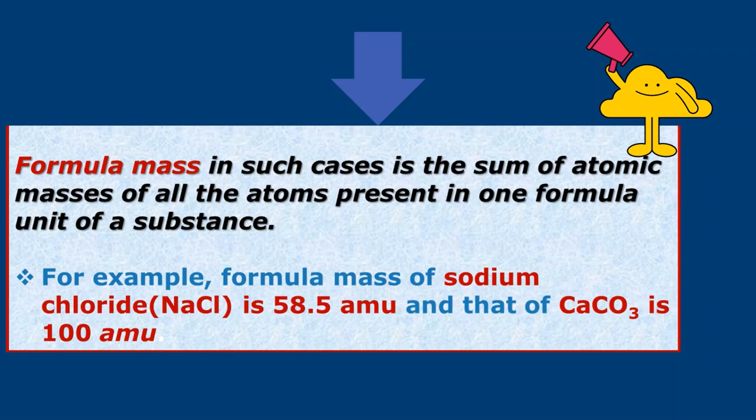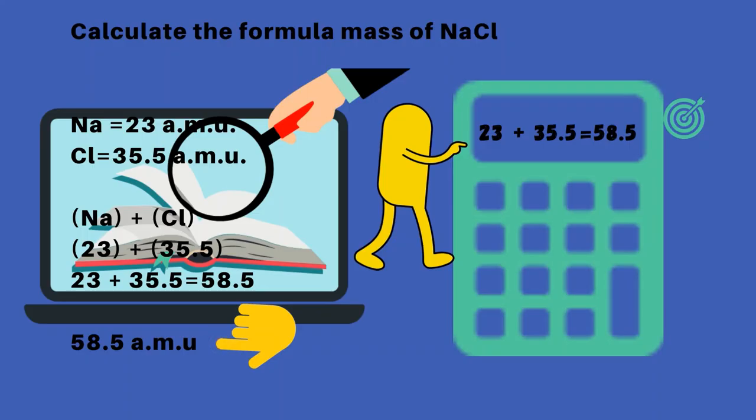Calculate the formula mass of NaCl. Na equals 23 amu, Cl equals 35.5 amu. Na plus Cl: 23 plus 35.5 equals 58.5. 58.5 amu.